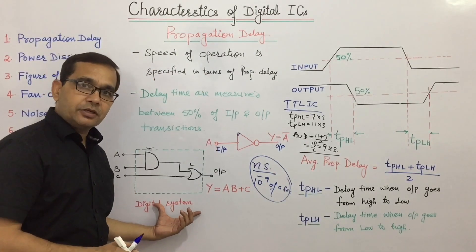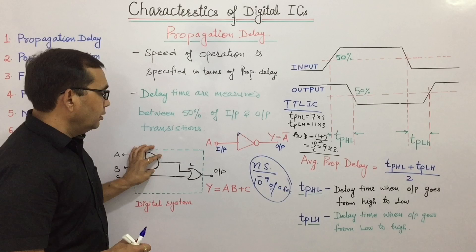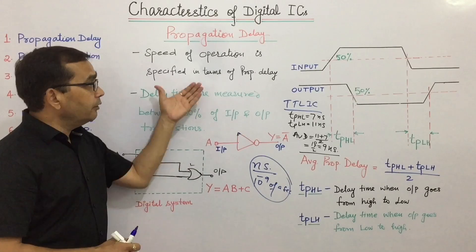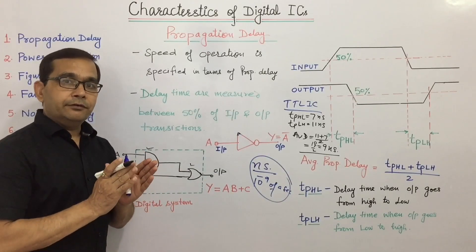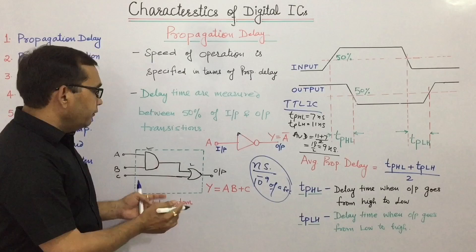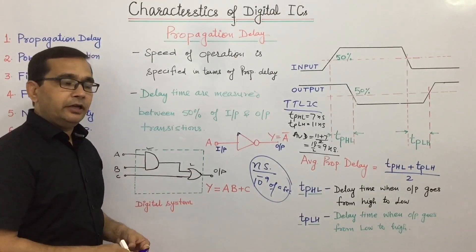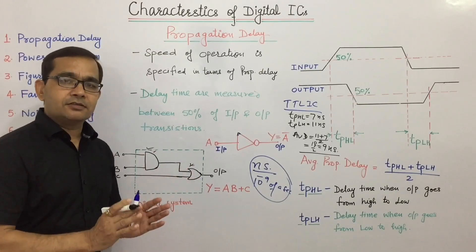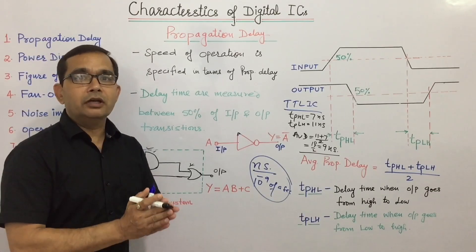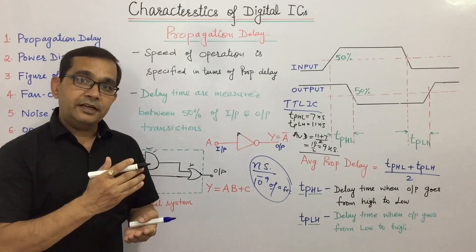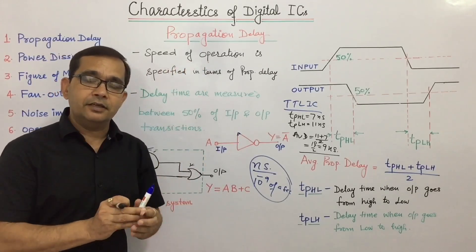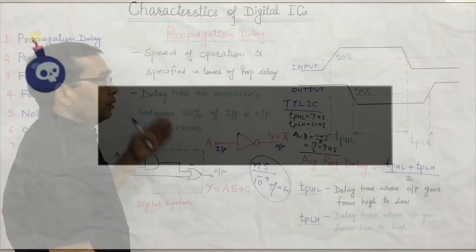If we want to calculate the propagation delay of a digital system, it will be the sum of the propagation delays of the individual gates. The speed of operation of an IC is always specified in terms of propagation delay — less propagation delay means more speed of operation. So it is always advantageous to have a smaller propagation delay. The gates used in a digital system should have smaller propagation delays, and we should use fewer gates, so that the total propagation delay of the digital system is smaller and the speed of operation is much higher.